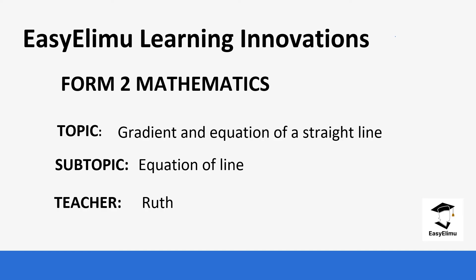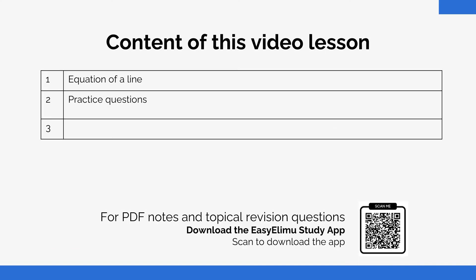Welcome to EZLM Learning Simplified. My name is Ruth and today we are going to be learning Form Two Mathematics. Our topic is gradient and equation of a straight line, with focus on the equation of a line. Previously we looked at how to calculate gradient when given a point on a straight line; today we look at how to get the equation of a line in different aspects.